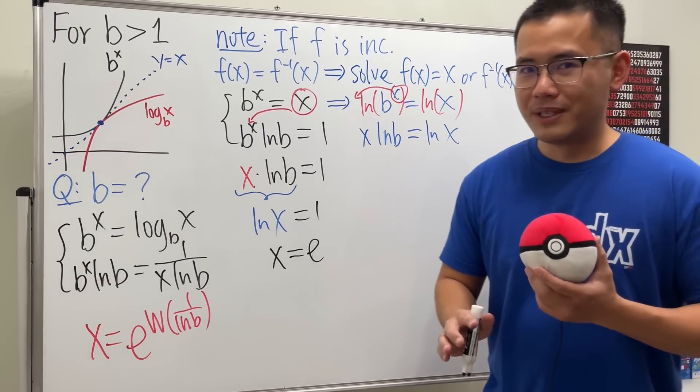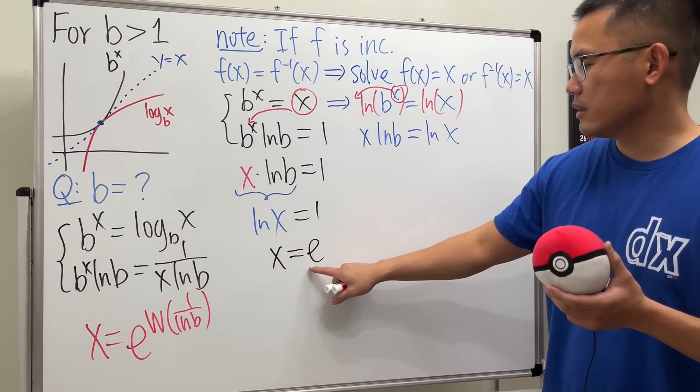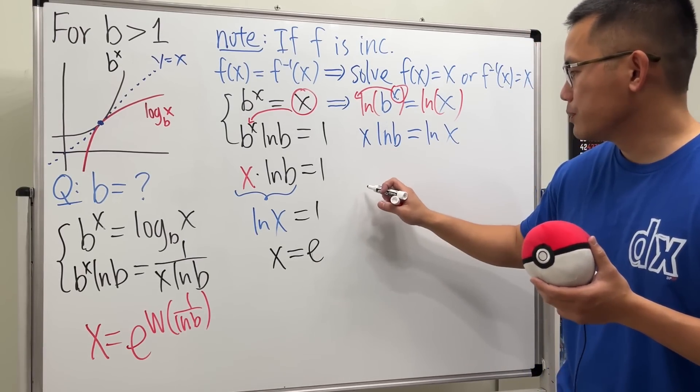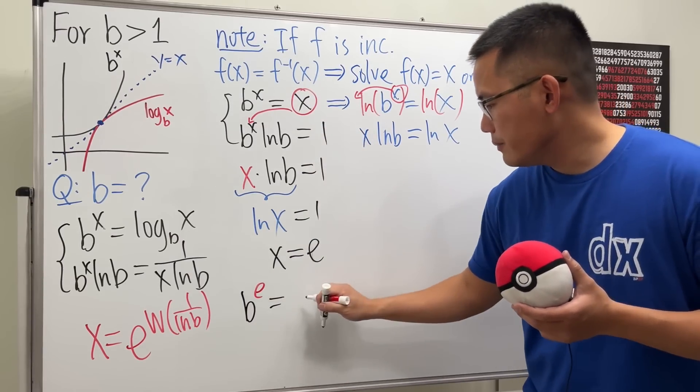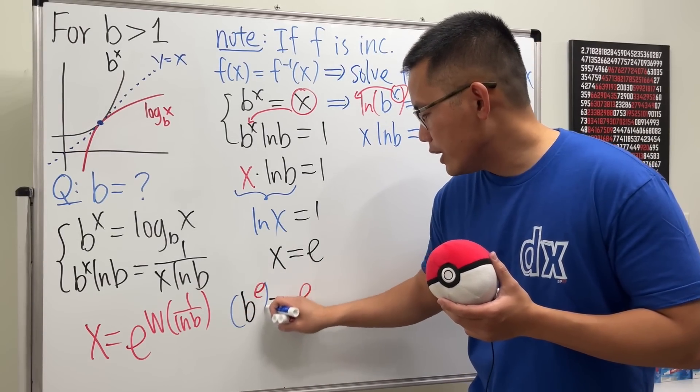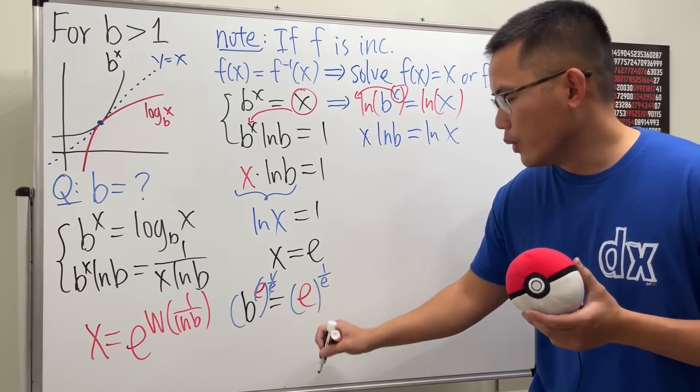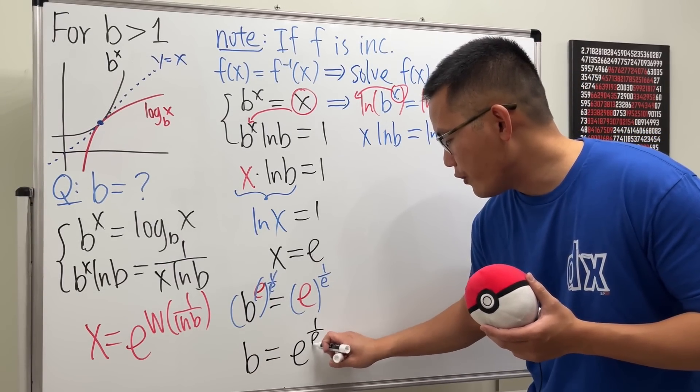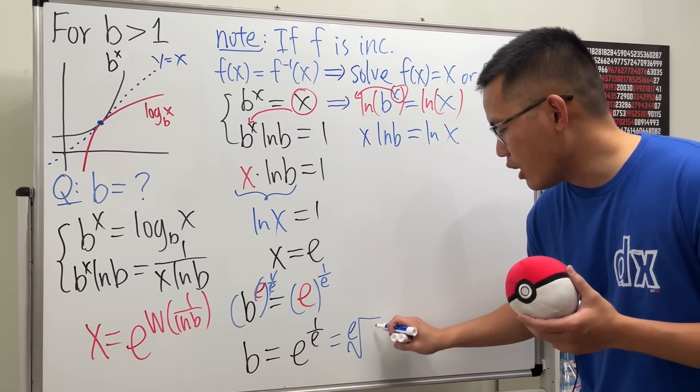But we're not done yet because this is just x. We want to find what b is. So we put e into this x, so we get b^e equals e. Ladies and gentlemen, to solve for b we can just raise both sides to the 1/e power, so this and that will cancel and we get b equals e^(1/e), or if you'd like, you can write this as the eth root of e, which is really cool.